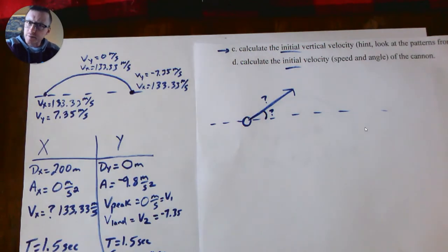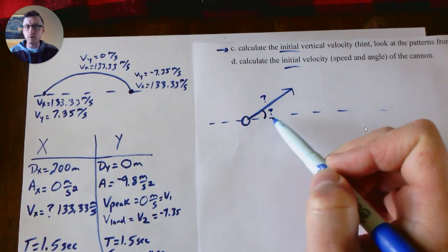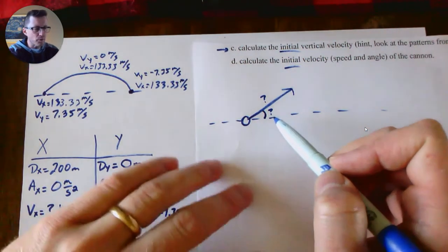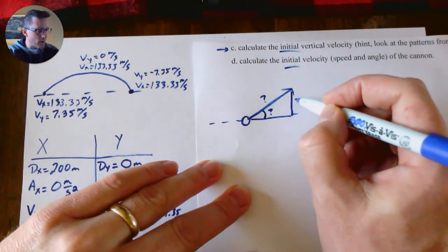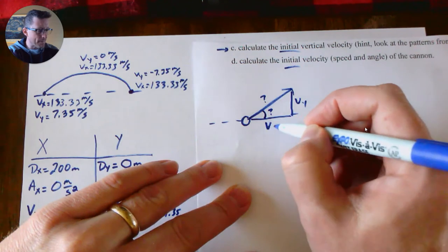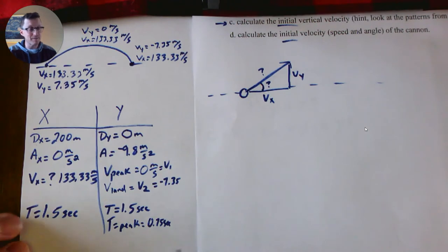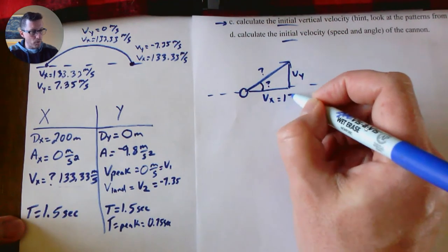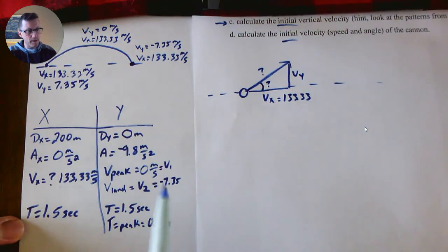This one's a little different than what we've done because normally we've said, okay, we already know the speed and we know the angle, and we use SOHCAHTOA to break it down so we can figure out the Vx and the Vy. This one's different because we actually calculated the Vx and the Vy. We know the Vx is 133.33 and we know the Vy is 7.35.